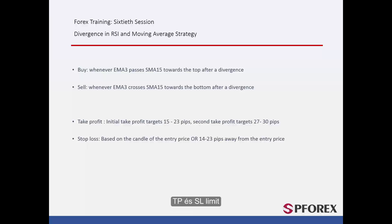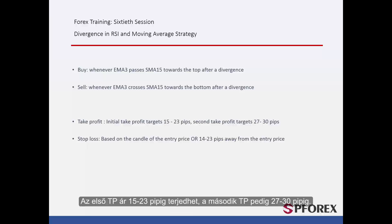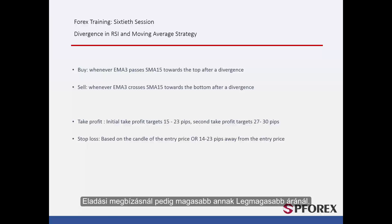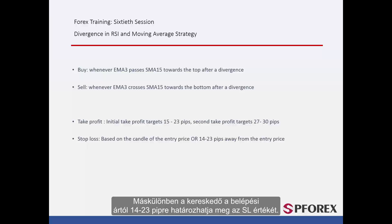Regarding TP and SL limits: the first TP price may be from 15 pips to 23 pips, while a second TP price can be from 27 pips to 30 pips. SL price can be lower than the low price of the utilised candle pattern in a buy order, or higher than the high price in a sell order. Otherwise, a trader can determine SL value 14 to 23 pips away from the entry price.